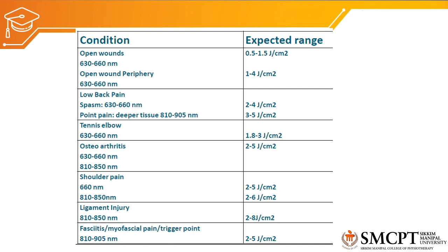Let's discuss conditions and expected intensities. For an open wound, we use visible red laser with an intensity of 0.5 to 1.5 joules per centimeter square. For the open wound periphery, the intensity is 1 to 4 joules per centimeter square. For low back pain, we select red visible light laser with an intensity of 3 to 5 joules per centimeter square.